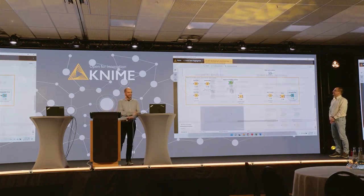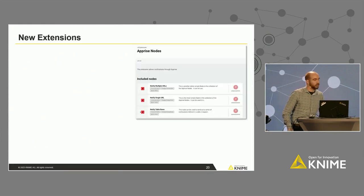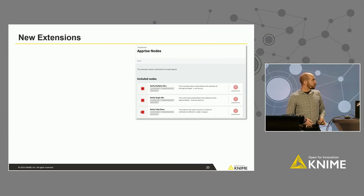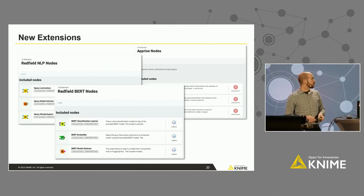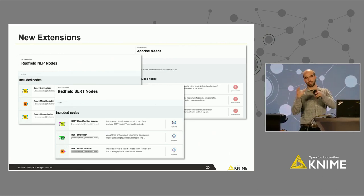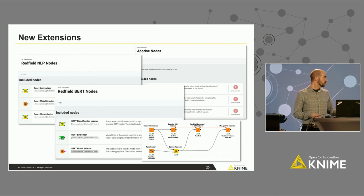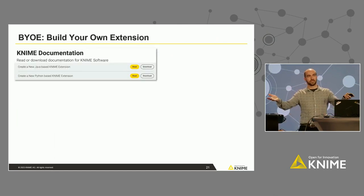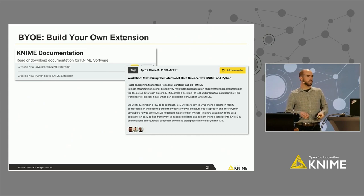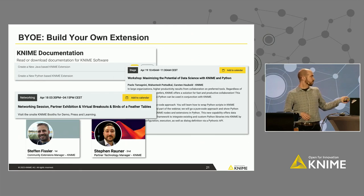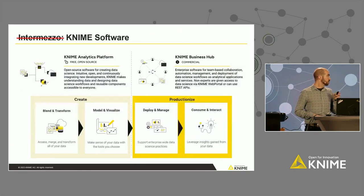These were not the only extensions. There's already an extension built by the community — the price nodes for notifications. There are partner extensions; the Redfield team is developing NLP and BERT nodes that use the whole infrastructure for sharing the Python environment when you install the extension. There are also EC2 instance management nodes, and we're developing more. Now it's basically up to you. We have documentation for all of this in Java or in Python. There will be a Python workshop tomorrow where we'll get into detail about how this works, and there are two gentlemen you can find at the birds-of-a-feather table later today to talk to if you want to build or have ideas for extensions.